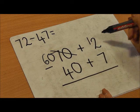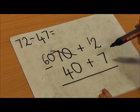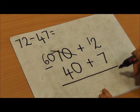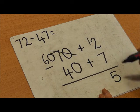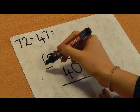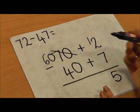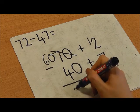12 take away 7 is 5. 60 take away 40 is 20.